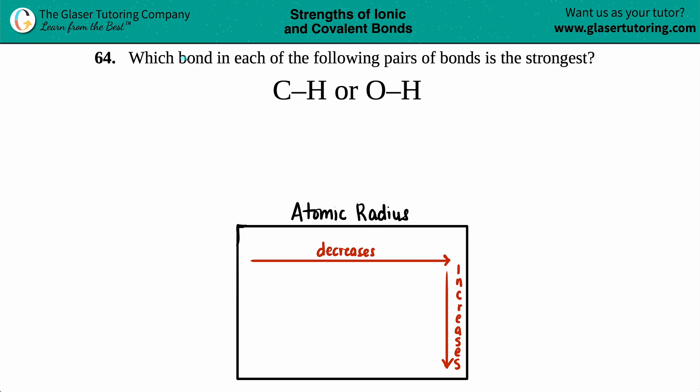Number 64: Which bond in each of the following pairs of bonds is the strongest? We have a carbon to hydrogen bond or an oxygen to hydrogen bond. In order to answer this type of question, we just have to look at the differences between the two types of bonds.